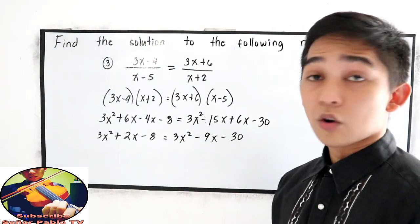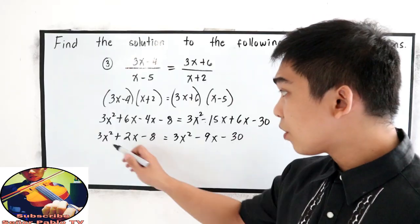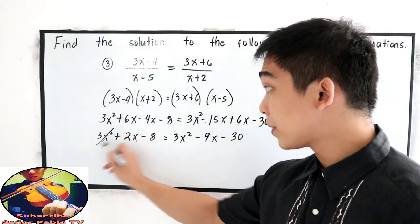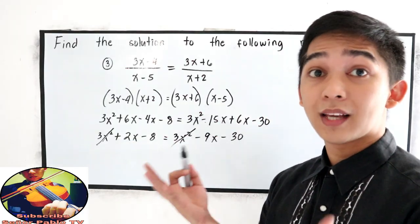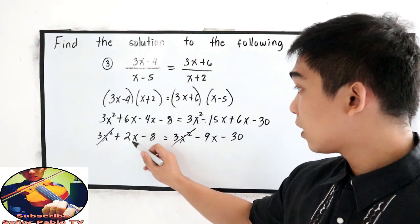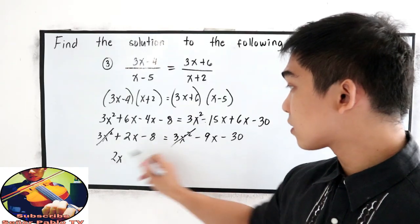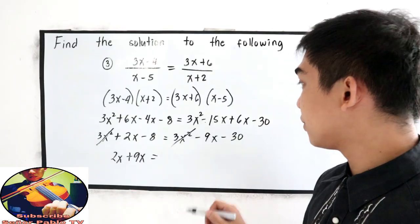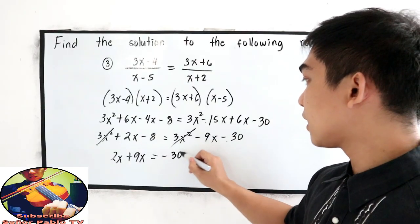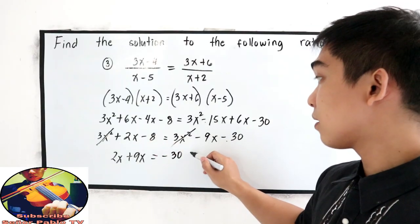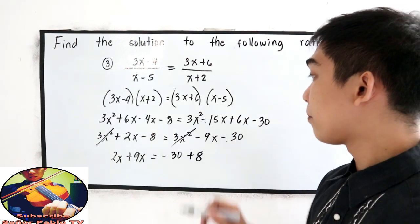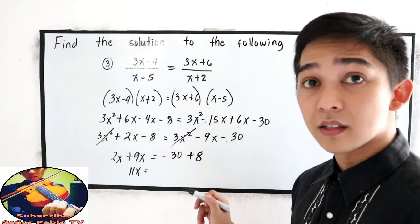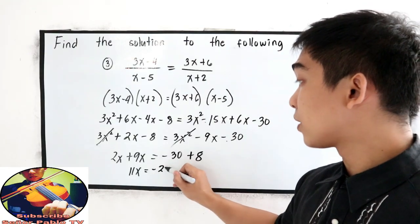And combine like terms. Notice that if we're going to transpose 3x squared, this will be 0. So we can cancel that out. Then 2x plus 9x is equal to negative 30, transpose negative 8 that will become positive 8. So 11x is equal to negative 30 plus 8, negative 22.